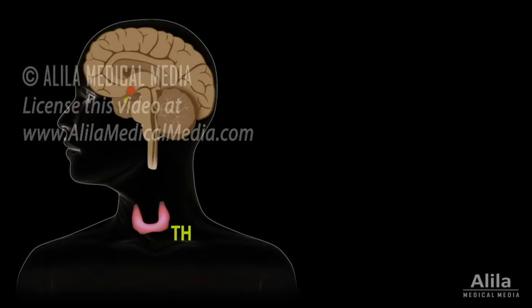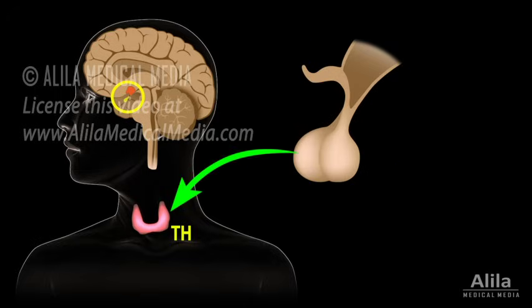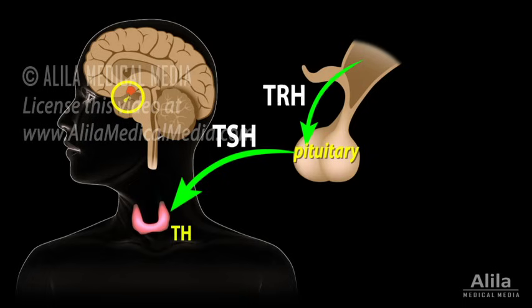Thyroid hormone secretion is under control of thyroid-stimulating hormone, TSH, from the anterior pituitary. TSH, in turn, is induced by thyrotropin-releasing hormone, TRH, produced by the hypothalamus.